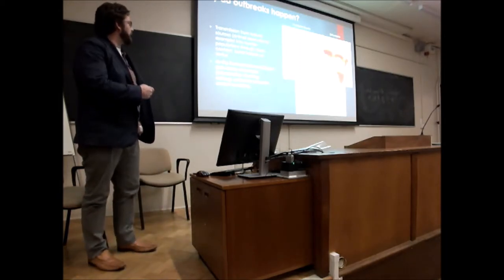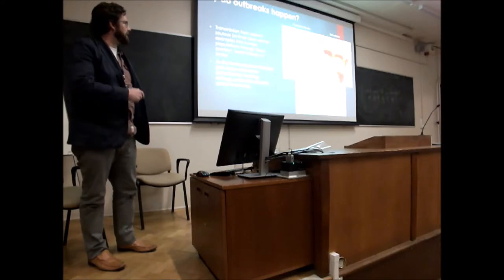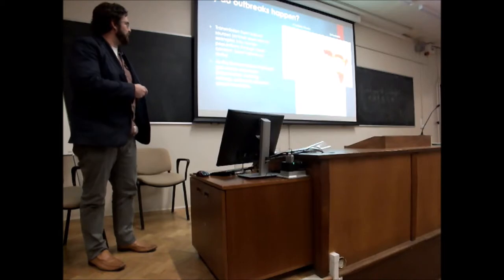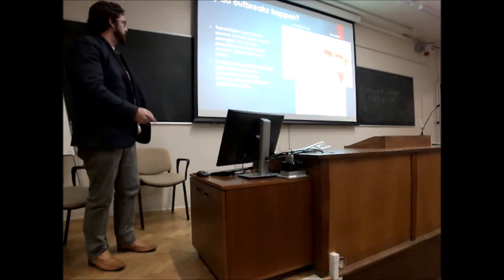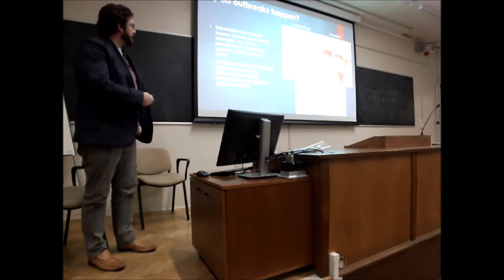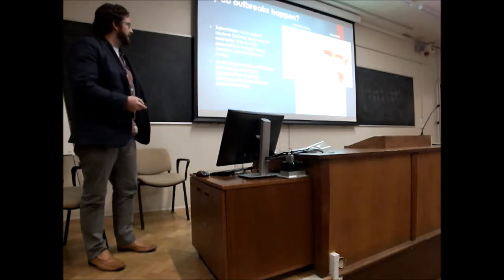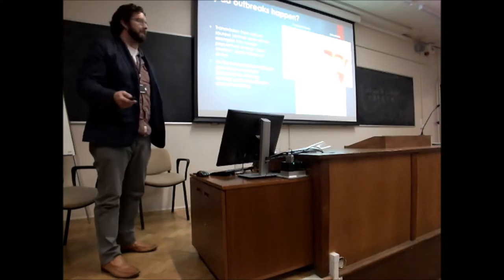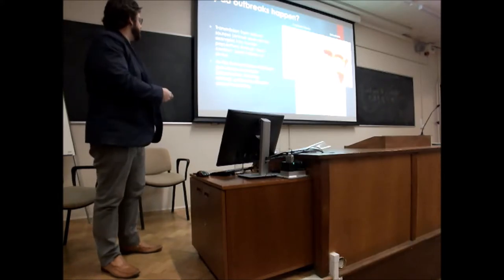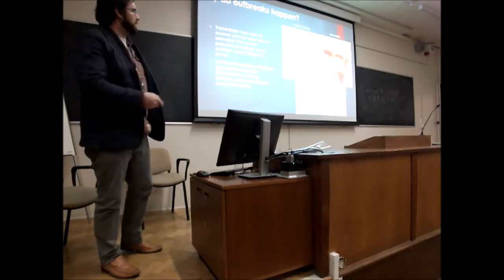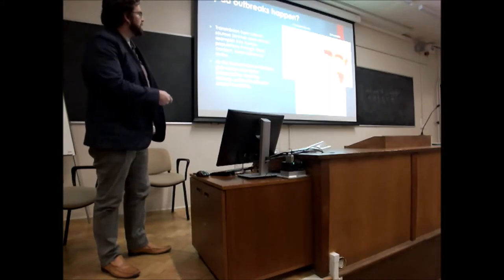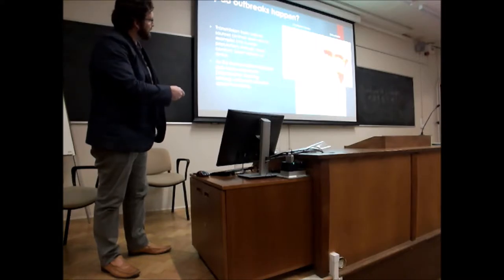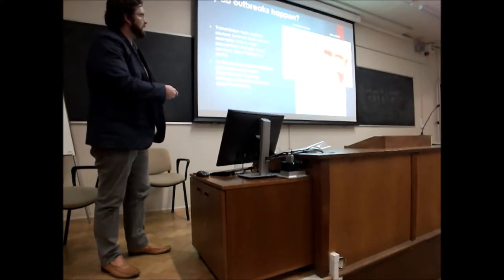Why are outbreaks happening so often? Generally, one of the most common reasons is transmission from animal reservoirs into the human population through food, contact, faeces, or urine. As the human-nature interface gets closer — through farming, as our population grows — outbreaks become almost inevitable. In Africa, population density and deforestation overlap, as you'd expect.